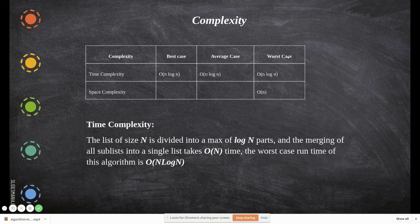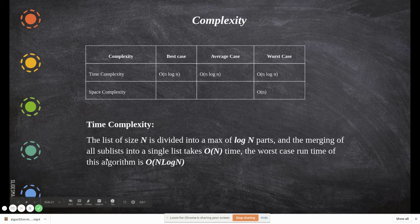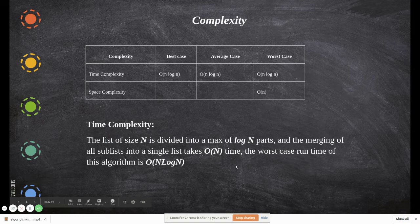That's why the execution term is given as n log n. And space complexity, the worst case is order of n. The list of size N is divided into a max of log N parts, and the merging of all sublists into a single list takes O(N) time.